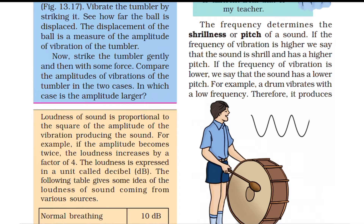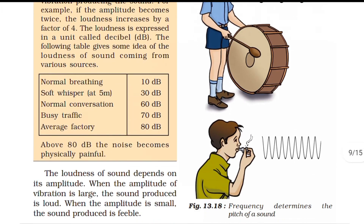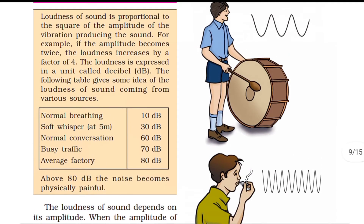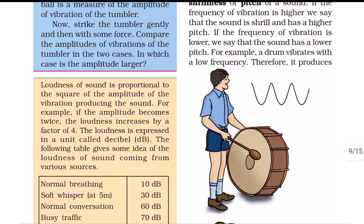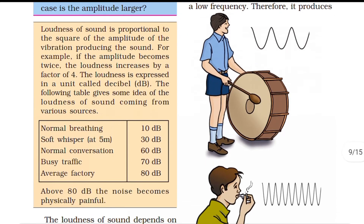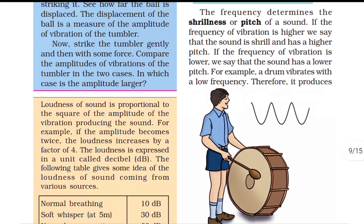If the frequency of vibration is higher, the sound is shrill and has a higher pitch. For example, a whistle has more vibrations per second, so it has higher pitch. If the frequency of vibration is lower, the sound has a lower pitch — for example, a drum vibrates at low frequency and therefore produces a low-pitched sound.